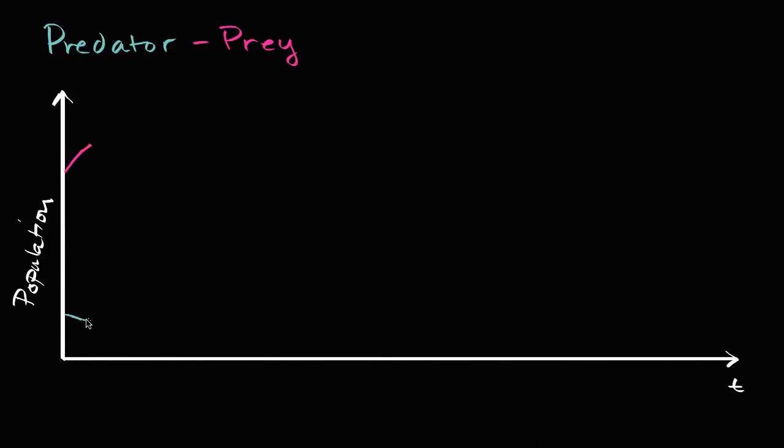Well, at this point, with a low density of predators, it's going to be much easier for them to find a meal, and it's going to be much easier for the prey to get caught. So since it's easier for the predators to find a meal, you can imagine their population starting to increase. But as their population is increasing, the prey is going to be more likely to get caught. There's going to be more of the predators around, so that population is going to start decreasing.